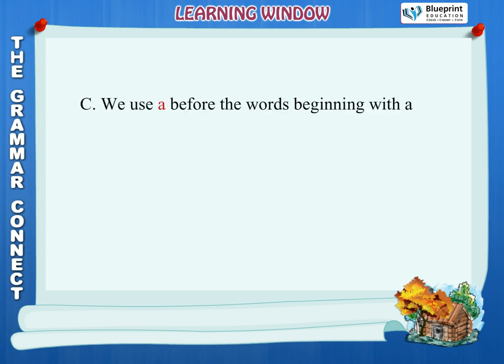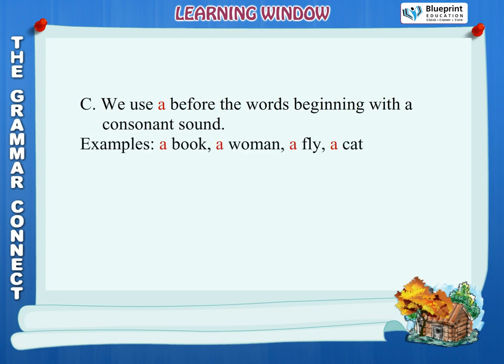Rule C: We use a before words beginning with a consonant sound. Examples: a book, a woman, a fly, a cat.